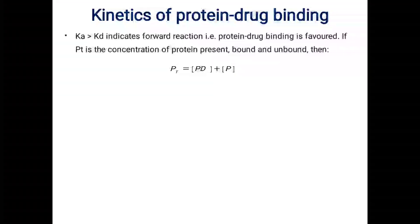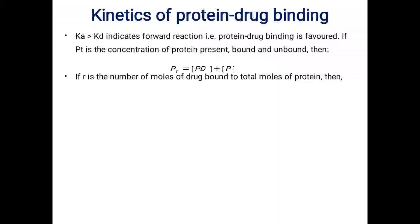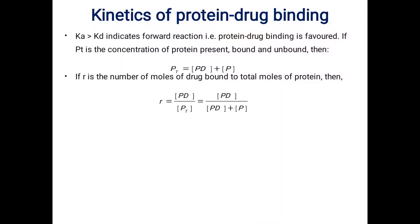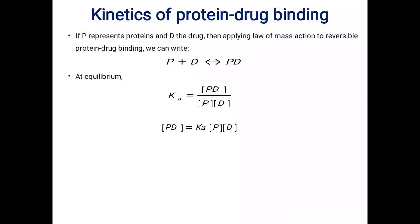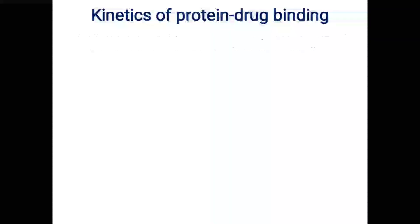Pt equals PD plus P, where PD is bound protein and P is free protein. If r is the number of moles of drug bound to total moles of protein, then r is equal to PD divided by Pt. By substituting the value of Pt into this equation, we get PD divided by (PD plus P). By substituting the value of PD — which is Ka times P times D — into this equation, we proceed to simplify.